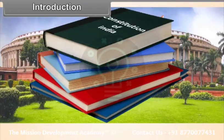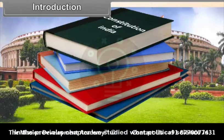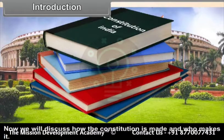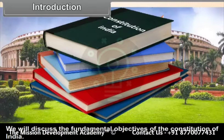Chapter 5: Making of the Constitution. In the previous chapter, we studied what political science is — its subject matter and importance. Now, we will discuss how the constitution is made and who makes it. We will also discuss the fundamental objectives of the Constitution of India.